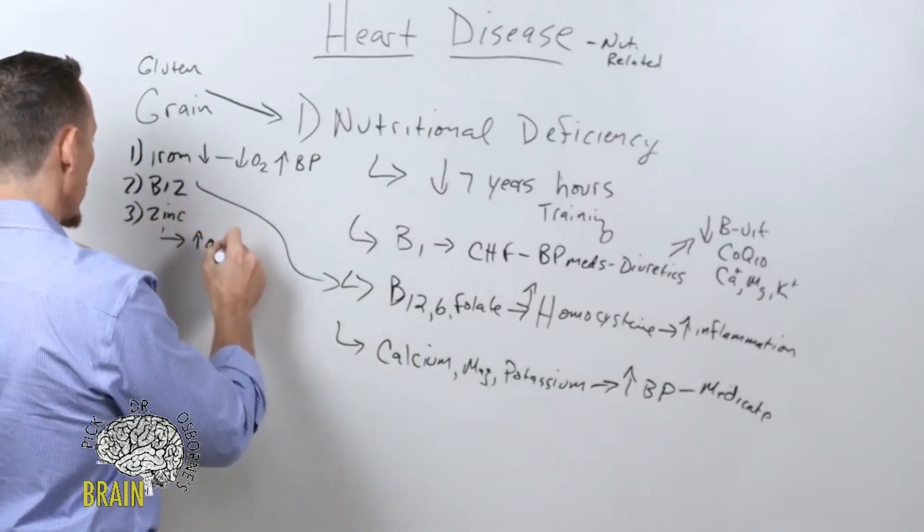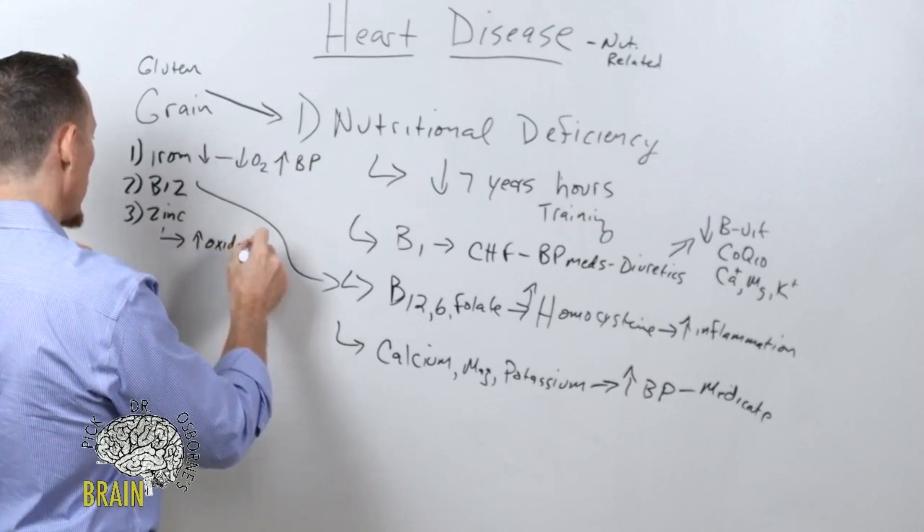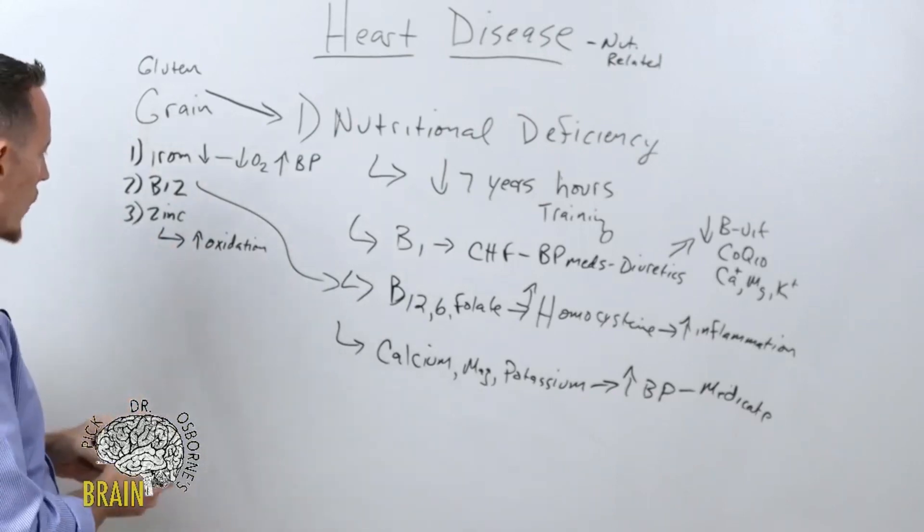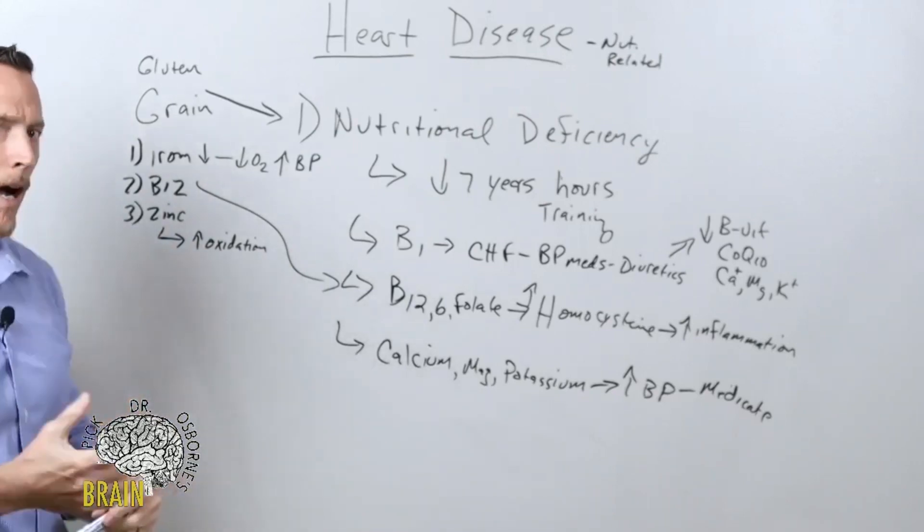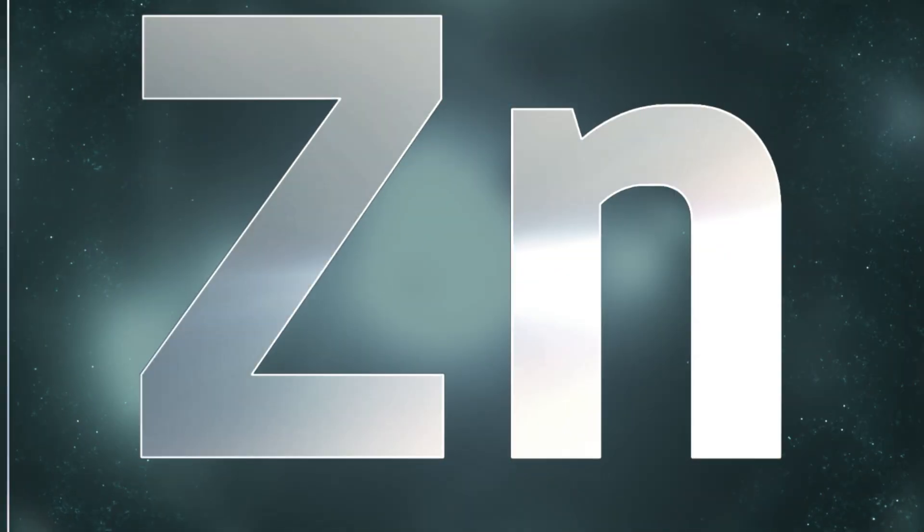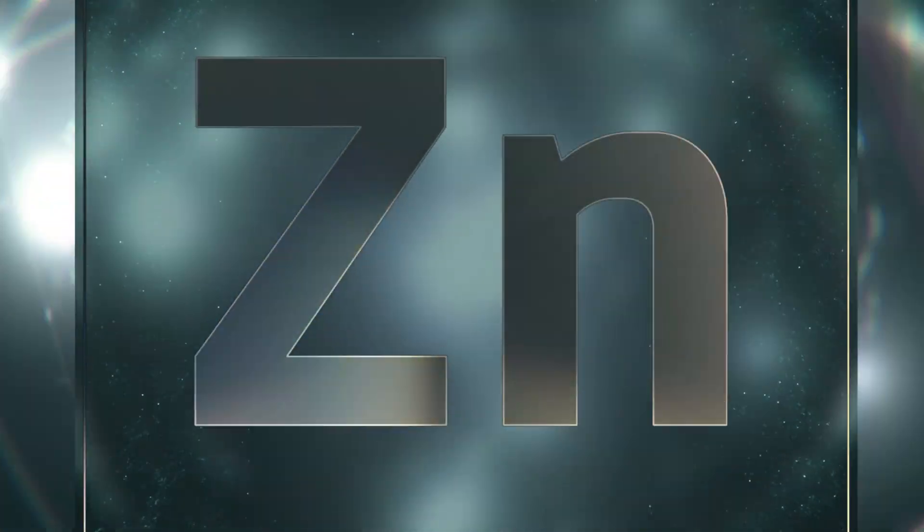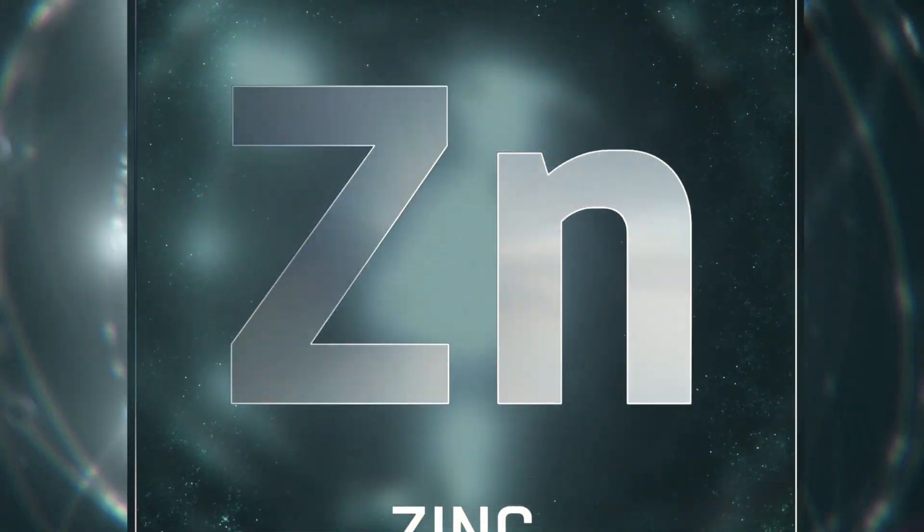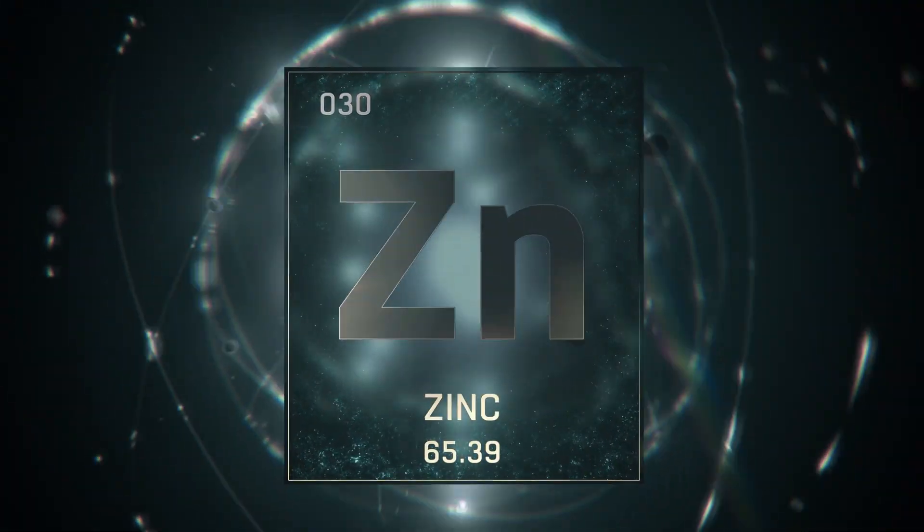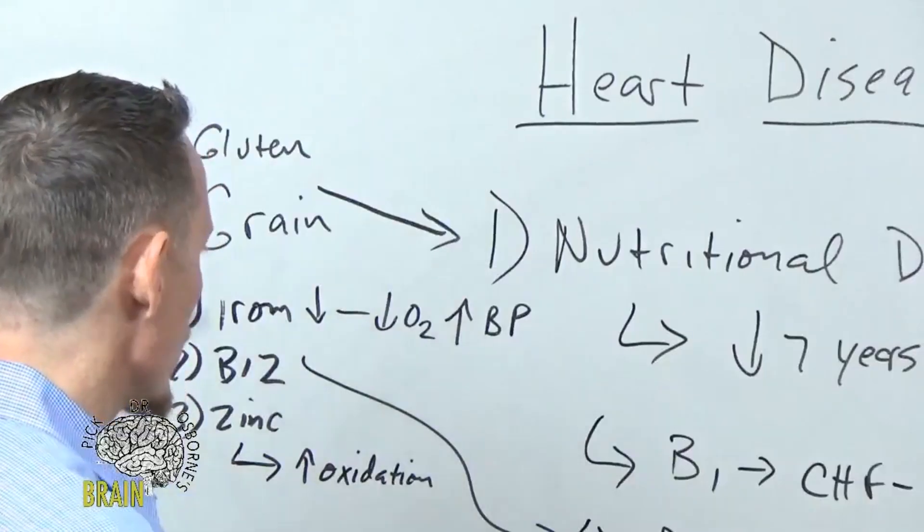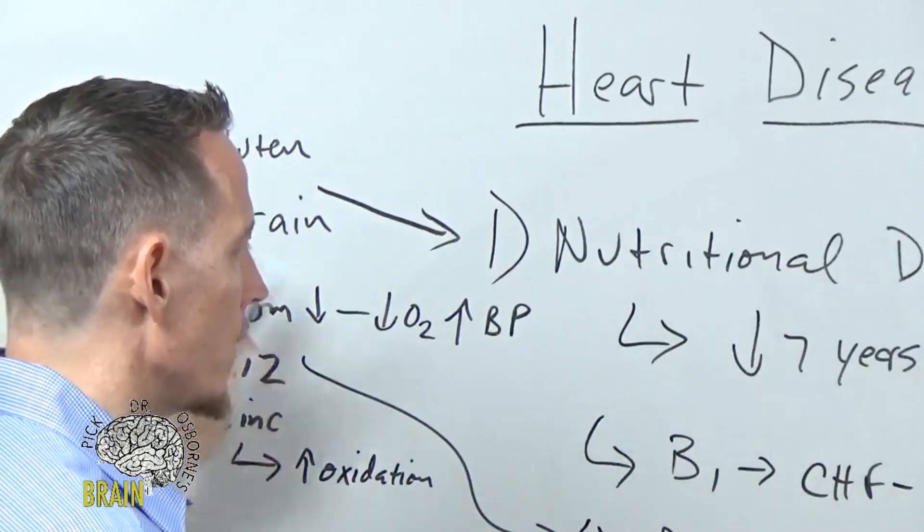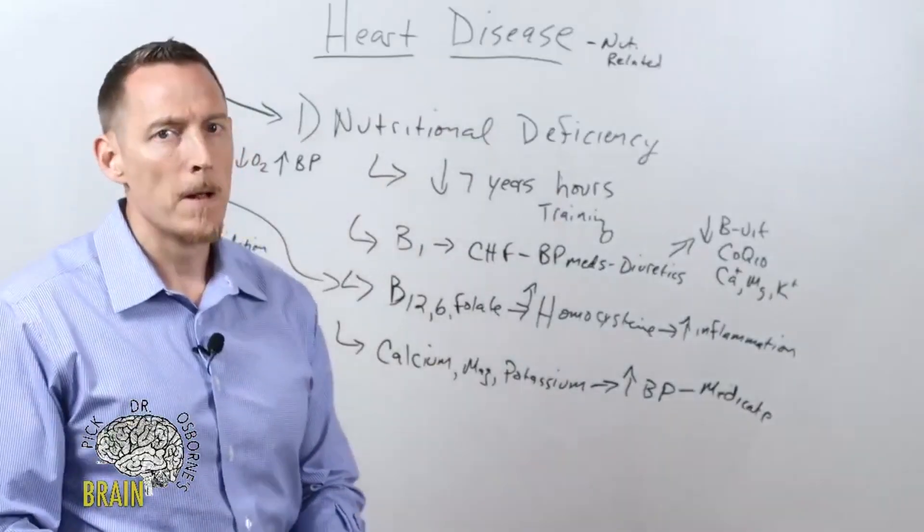Low zinc causes an increase in oxidation. Oxidation is a byproduct of your chemistry where things become damaged. If you've ever heard of a free radical or an antioxidant, zinc is one of the most powerful antioxidants that your body has. It runs and drives a very potent antioxidant system that prevents an increase in oxidative damage, which is a precursor to inflammation. These three are the top three I see contributing to heart disease after people get a recognition that they're gluten sensitive.